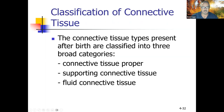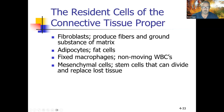Classification of connective tissue: three broad categories are connective tissue proper, supporting connective tissue, and fluid connective tissue (blood). Resident cells of connective tissue proper include fibroblasts ('blast' means to build — they build fibers and ground substance), adipocytes (fat cells), fixed macrophages (non-moving white blood cells), and mesenchymal cells, which are stem cells that divide and replace lost tissue. When there aren't enough, scar tissue forms.